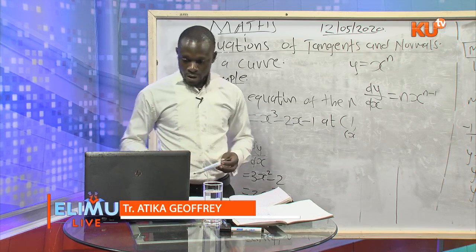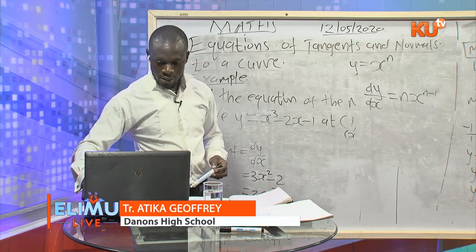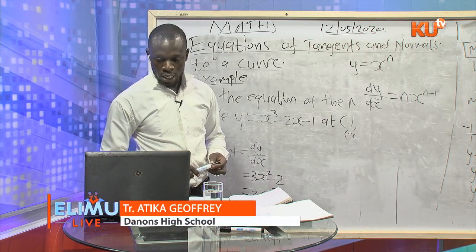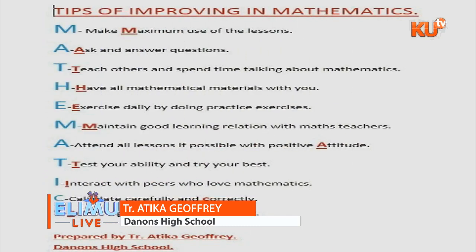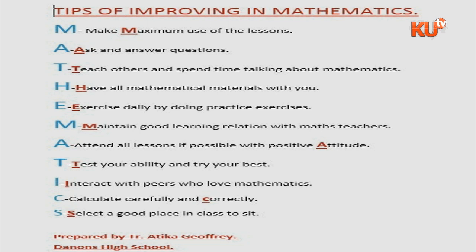T stands for: test your ability and try your best. I stands for: interact with peers who love mathematics. Choose your friends wisely — don't choose friends who have a negative attitude towards mathematics, as they will influence you.